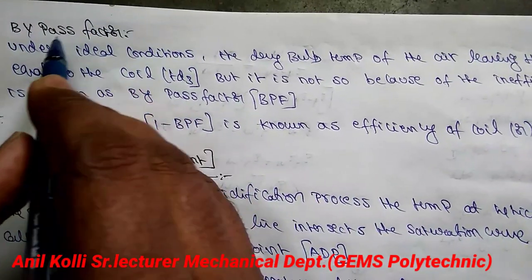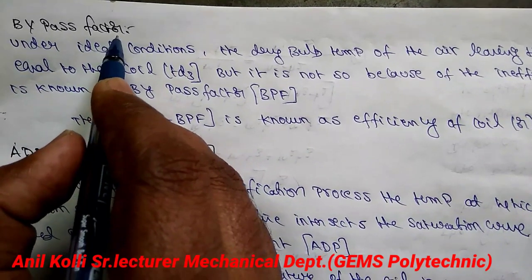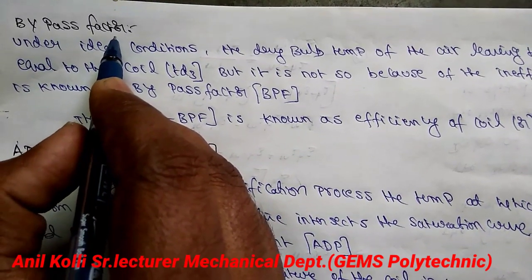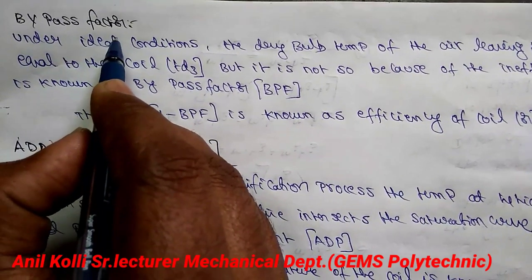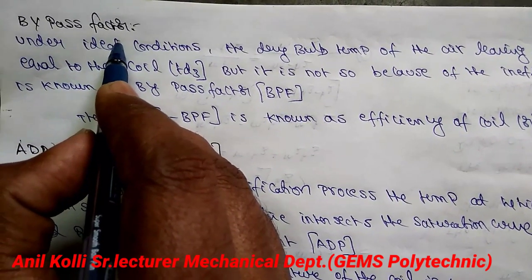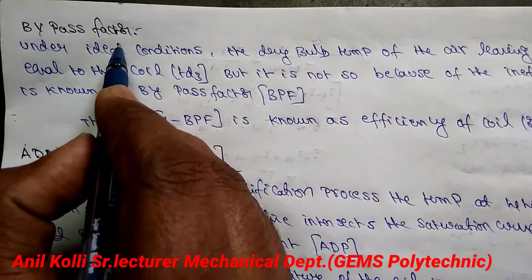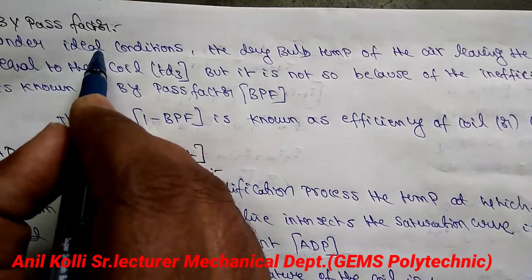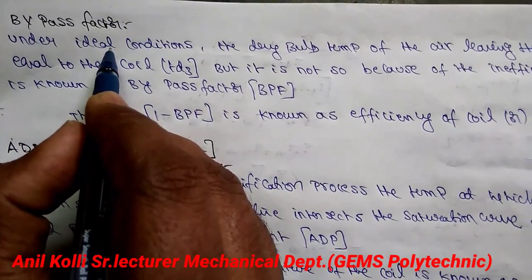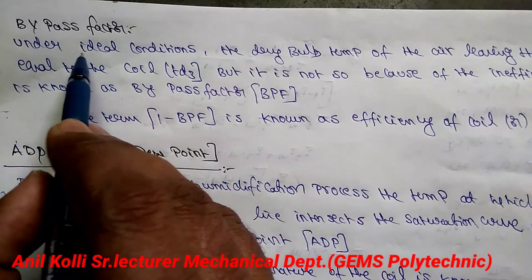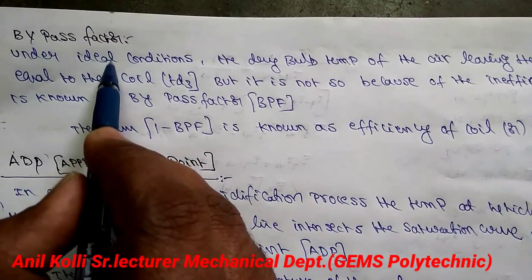Hello students, today we will see another topic. We will see the definitions: what is bypass factor, what is apparatus dew point, what is sensible heat factor, what is room sensible heat factor, what is grand sensible heat factor, what is effective sensible heat factor. These are the definitions as per our diploma standards — knowing the definitions is sufficient for us. So, let us go for the detailed description of the definitions.